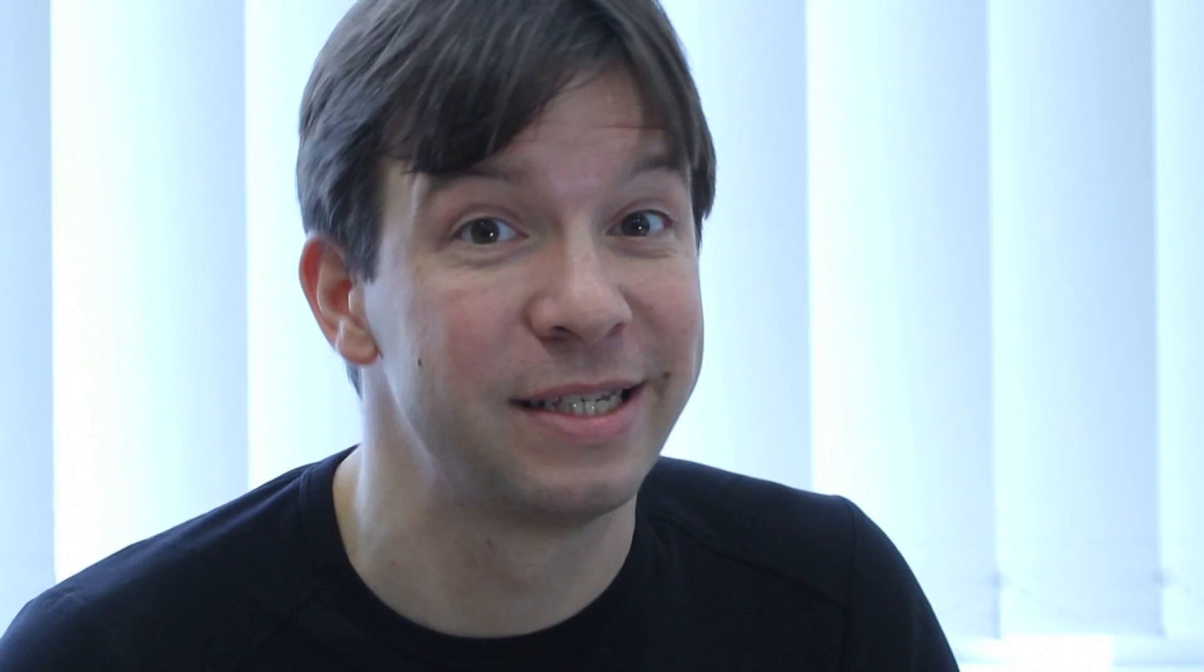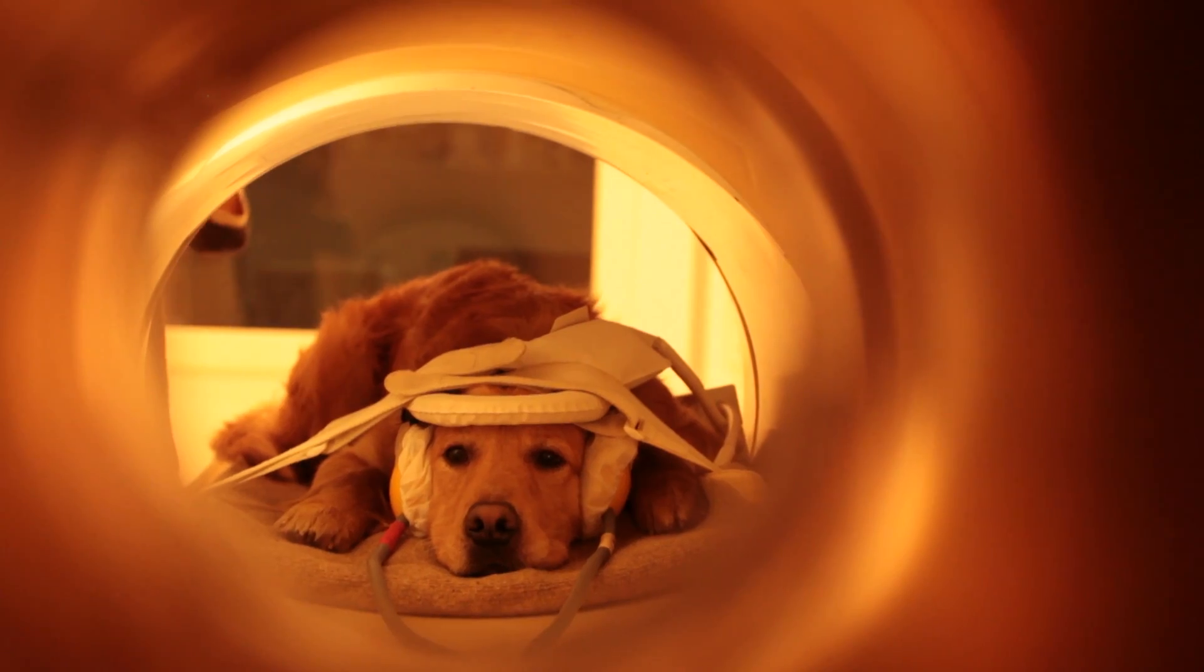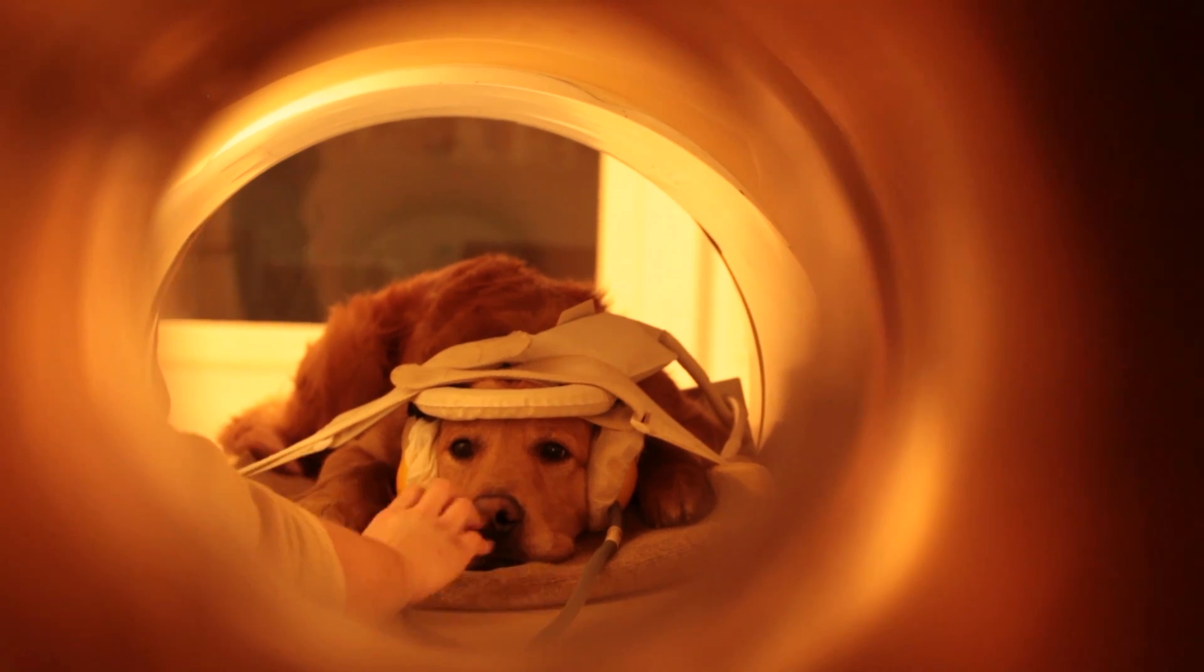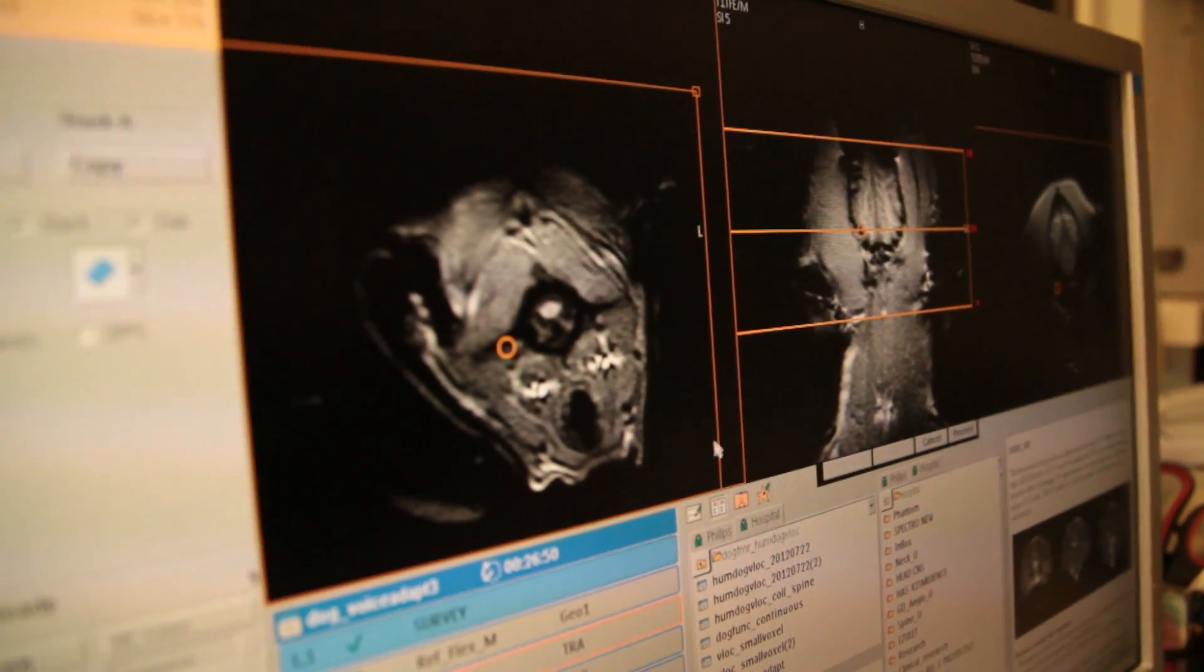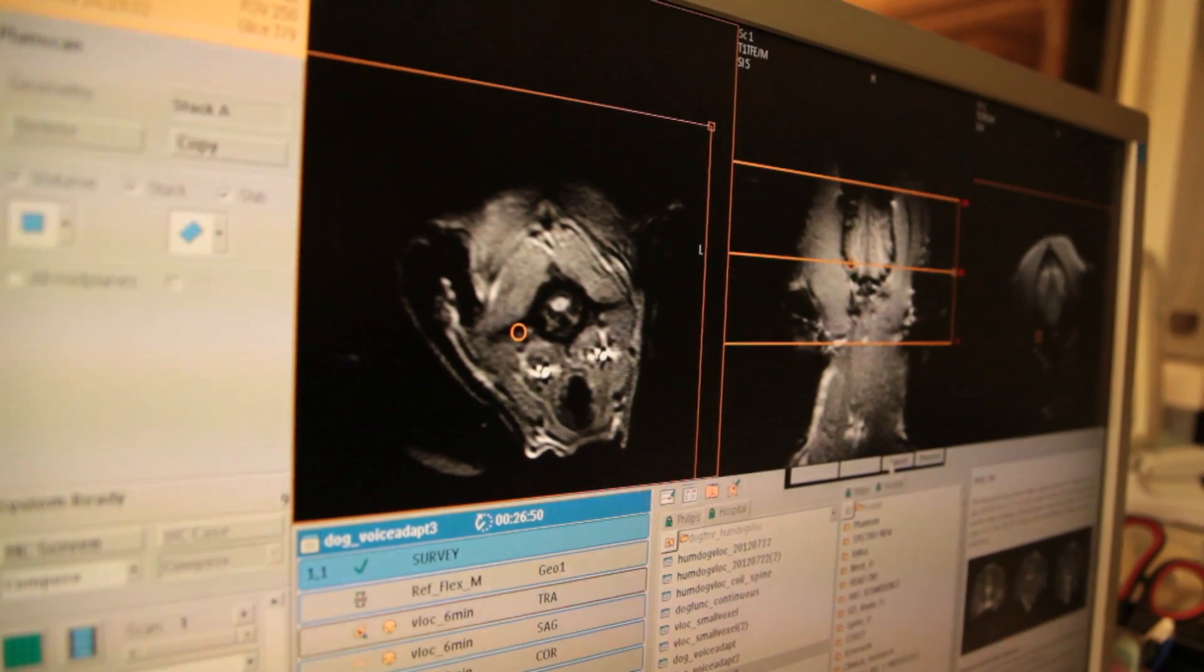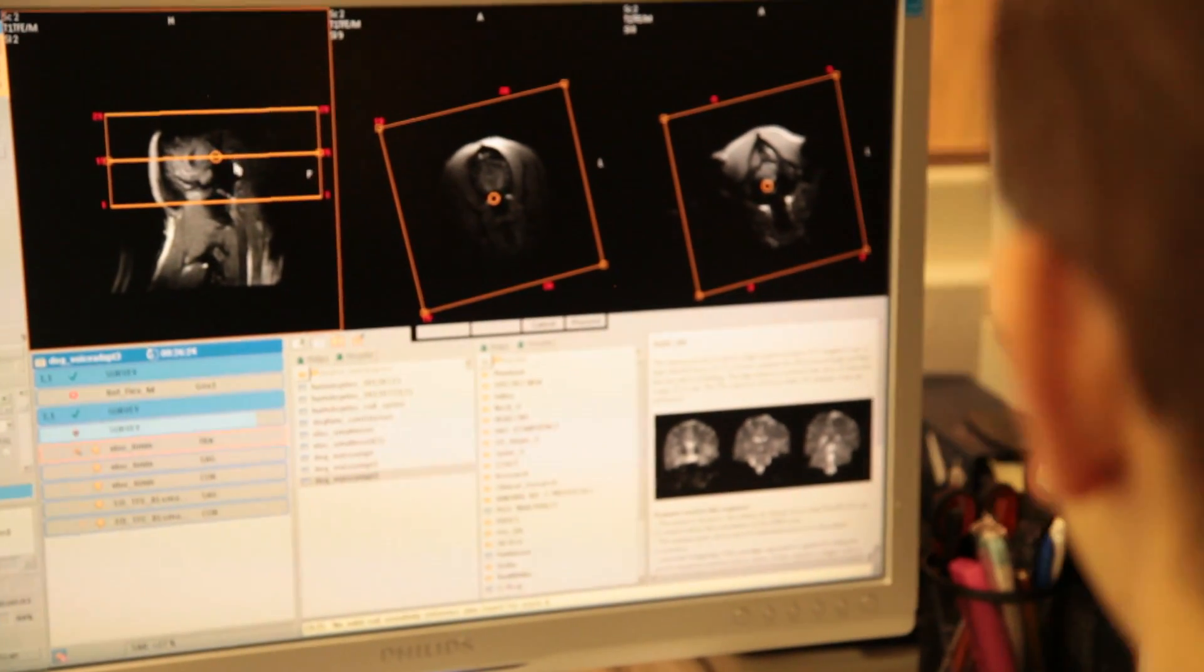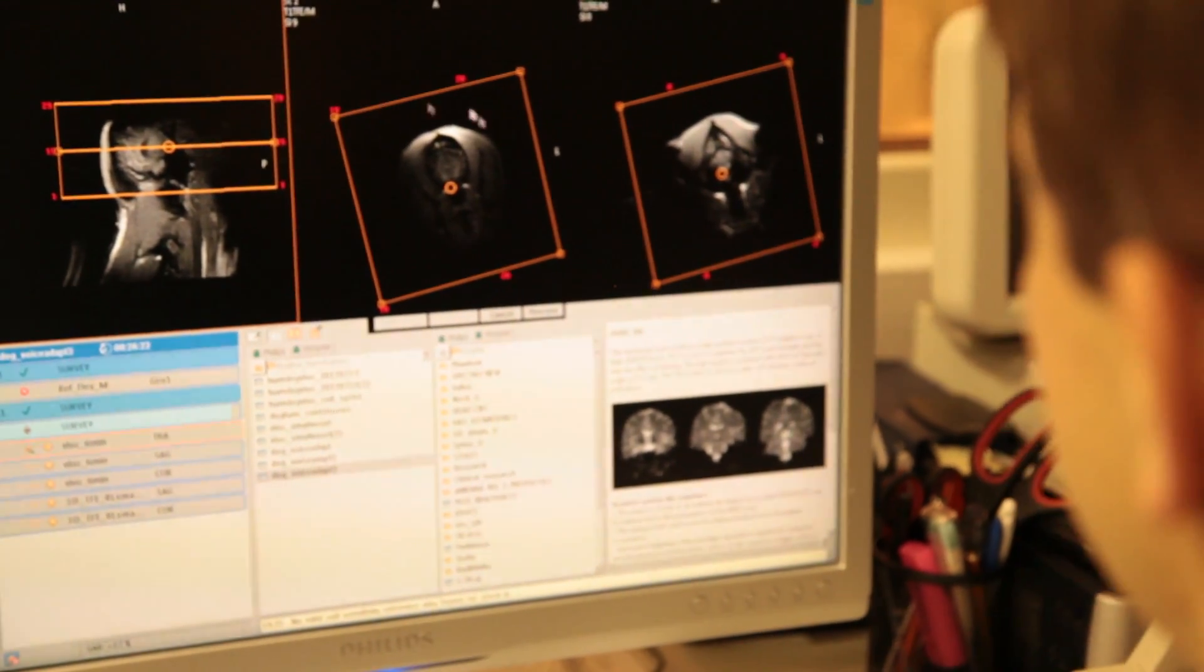Dogs have dedicated voice areas in their brains just as people do. The voice area of the dog responds more strongly to dog sounds and the voice area of the human brain responds more strongly to human sounds. Voice areas are located very similarly in the dog and human brain. This means that these areas evolved at least 100 million years ago, the age of the last common ancestor of humans and dogs.